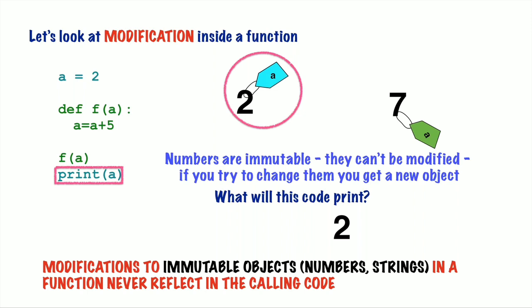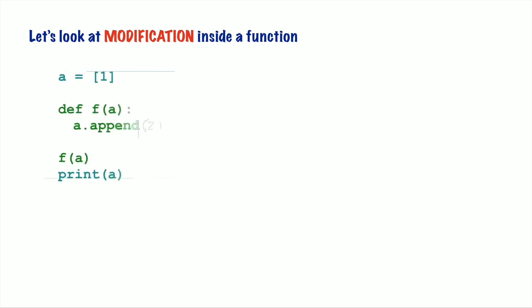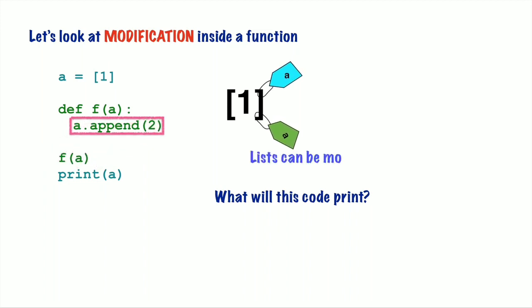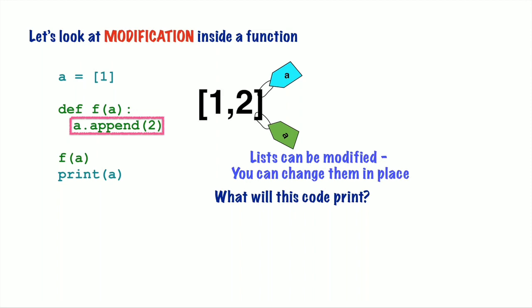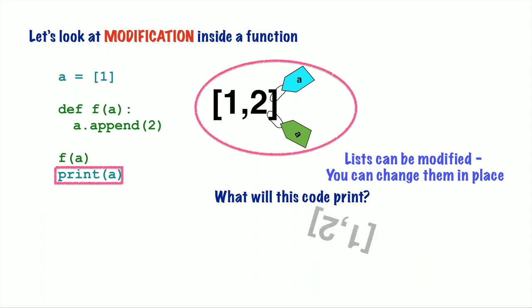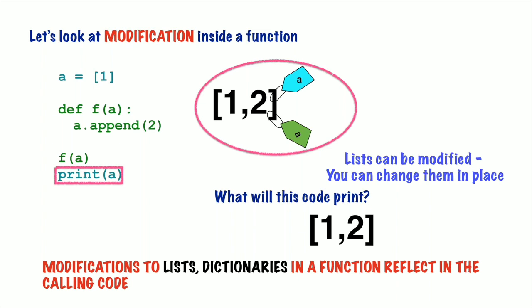Now let's see what happens when we try to modify mutable objects like lists or dictionaries. If we assign the name tag 'a' to a list with one element [1], then call the function f and pass it 'a', it creates a new name tag on that same object. Inside the function we modify the list — a list can be modified in place, so appending 2 to it modifies the same object that 'a' in the calling code points to. So when you print it you get the modified list. Therefore, modifications to lists or dictionaries do reflect in the calling code.